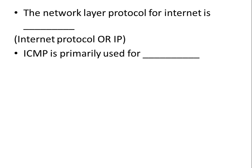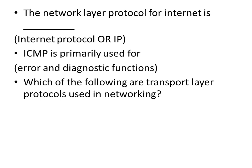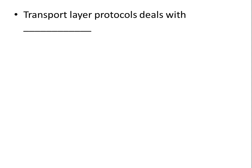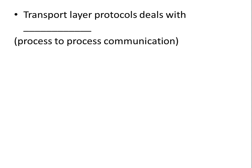ICMP is primarily used for error and diagnostic functions. Which of the following are transport layer protocols used in networking? TCP and UDP. TCP is a connection-oriented protocol. The transport layer protocol deals with process-to-process communication.